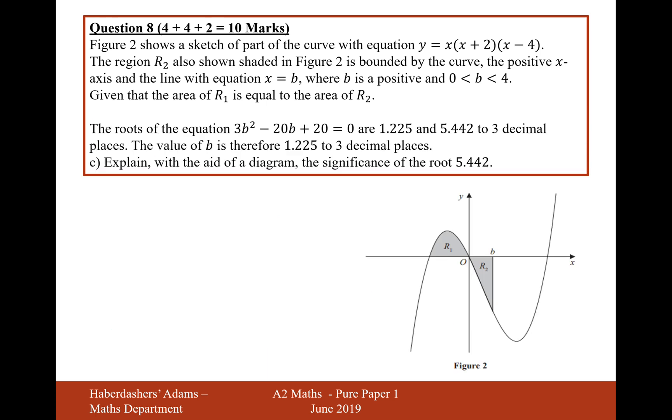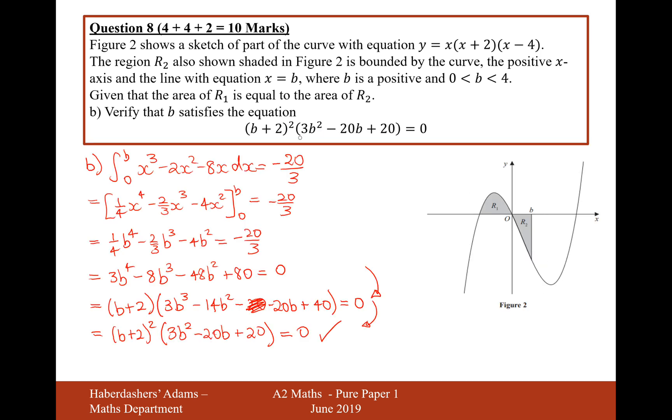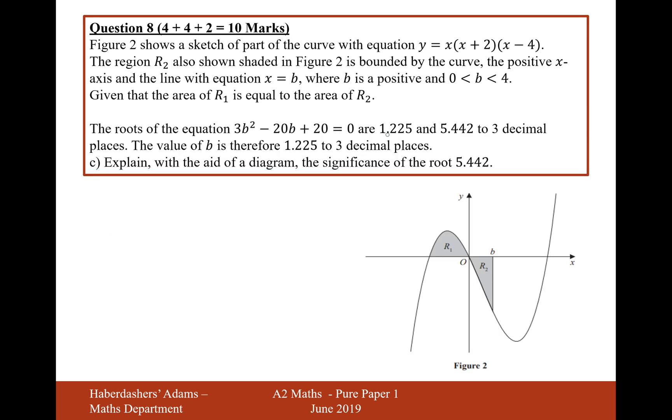Moving on to the final bit, the roots of the equation 3B squared minus 20B plus 20 equals 0, that was the second part on the root here, are 1.225 and 5.442 to three decimal places. The value of B is therefore 1.225 to three decimal places.